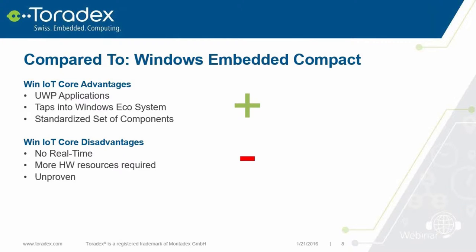Now let's compare Windows 10 IoT Core with other operating systems. I'm totally aware this is a little subjective and I've just picked a few points — we could probably have a big discussion per slide — but it should highlight some of the differences. If you want to comment, please feel free to use the chat and we can discuss that at the end. The first slide compares it to Windows Embedded Compact, to Windows CE.